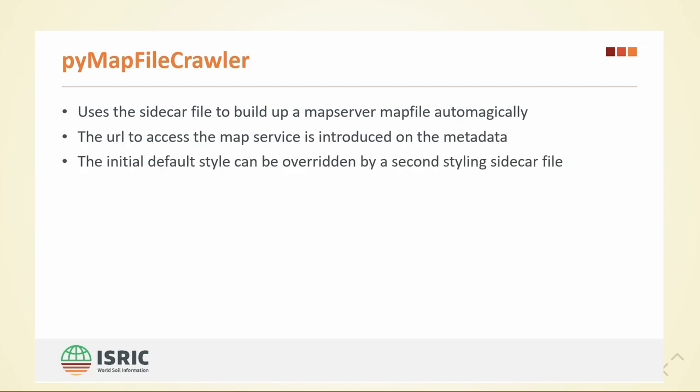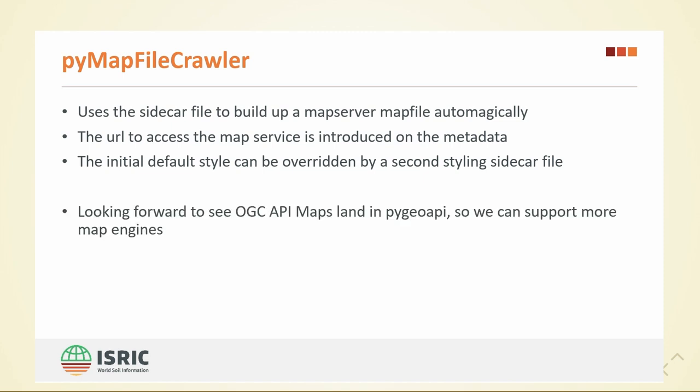Then there's the PyMapfile crawler. We use the sidecar metadata information to automatically generate a Mapserver map file. The URL to access that map file is then introduced back in the metadata, so if that metadata ends up in the catalog, you can access that WMS and WFS. The initial style is default, but you can override it with a style sidecar file. We're also looking forward to seeing OGC API Maps land in PyOGCAPI so we can support that toolchain as well.